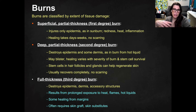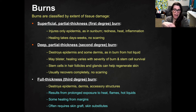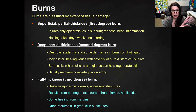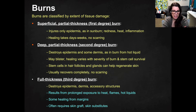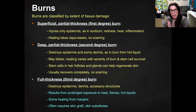A deep or partial-thickness second-degree burn destroys the epidermis and some of the dermis. This most typically happens from hot liquid, or from hitting your hand on the top heating element of an oven. Those burns may blister, and healing varies depending on severity and whether stem cells survive in the area.